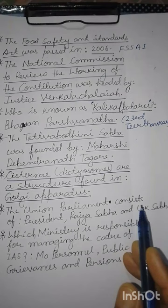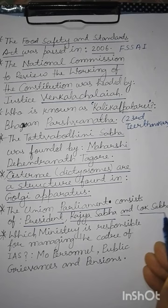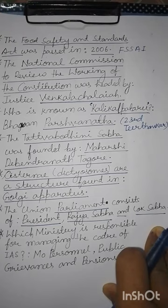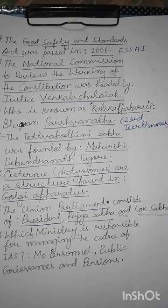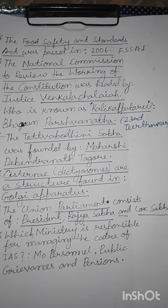The Union Parliament consists of the President of India, Rajya Sabha, and Lok Sabha. संघीय संसद के अभिन्न अंग राष्ट्रपति, राज्यसभा और लोकसभा हैं। What you have to notice is that the President is an inalienable part of the Union Parliament — because while a bill is passed by the two houses, it does not become an act unless and until the President has signed on it.